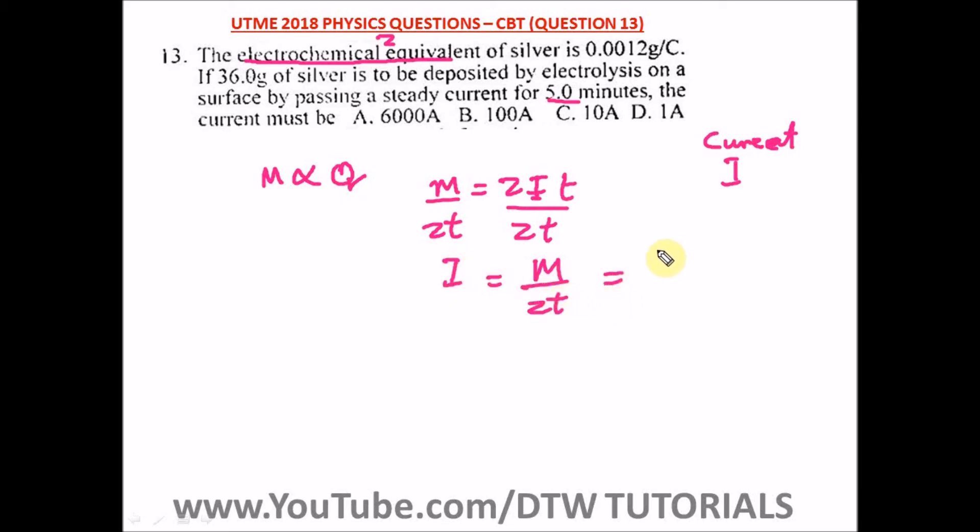So we have I equals m over zt. Our m is 36 grams divided by z which is 0.0012 times our time which is five minutes. We have to convert five minutes to seconds, so five times sixty. If you punch in your calculator all these values you're going to get 100.